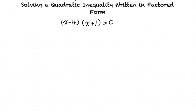If this expression was written as x minus 4 times x plus 1 equals 0, then we would see that the solution is x equals 4 and x equals negative 1.